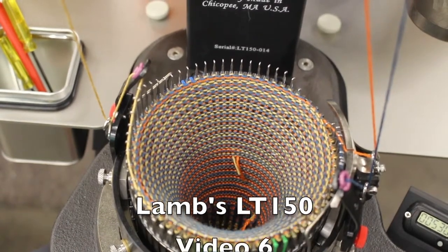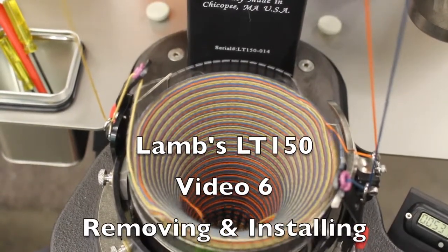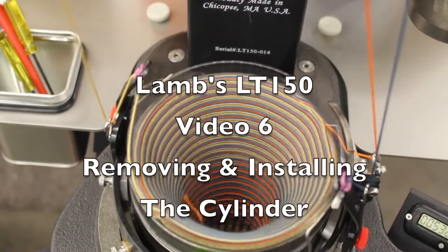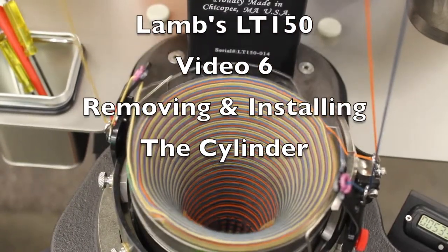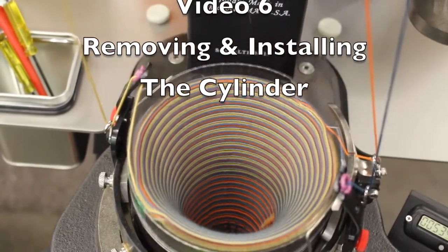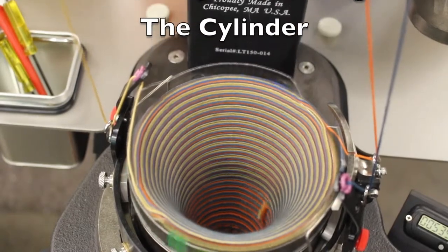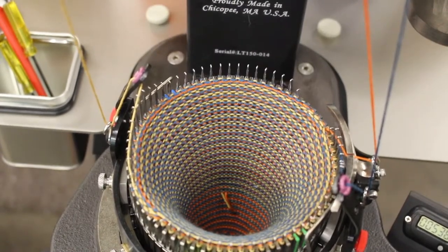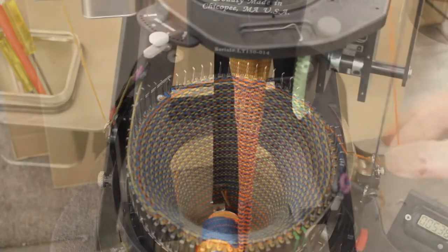This video shows a brief demonstration on how to remove and replace the cylinder on the LT150. This can be done with the knitting still on the cylinder, but of course it could be done after dropping the knitting.